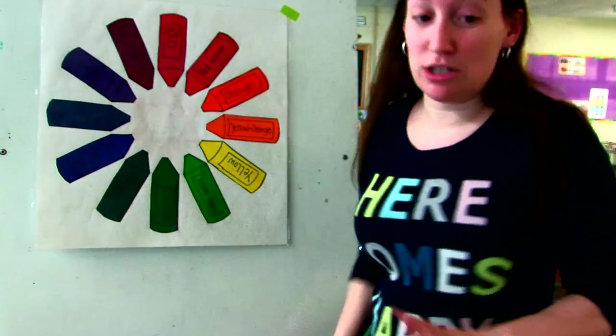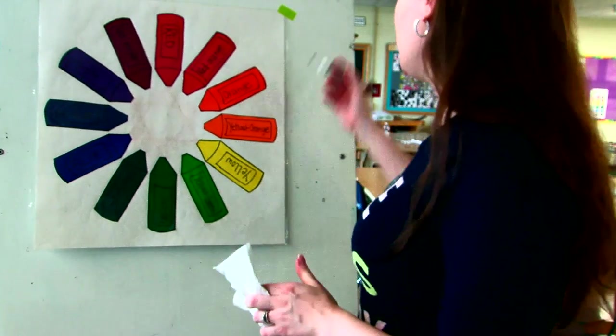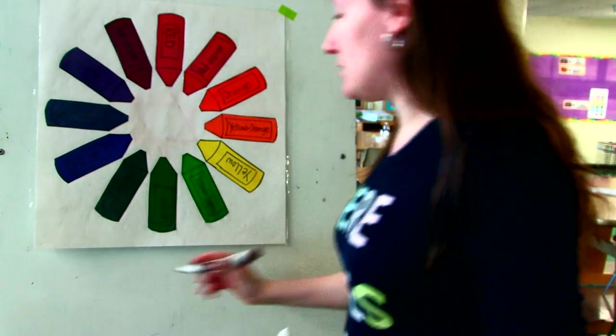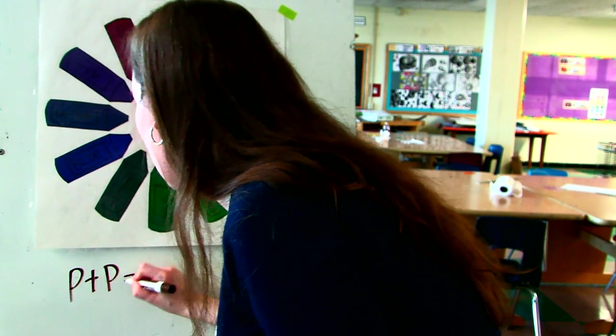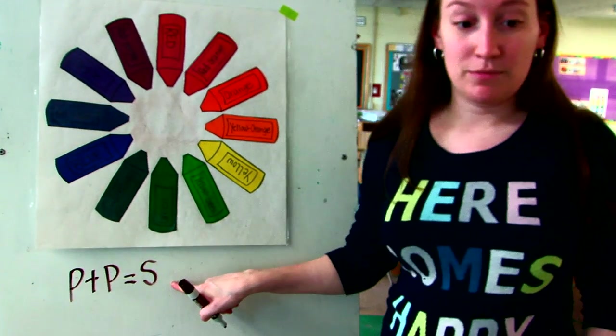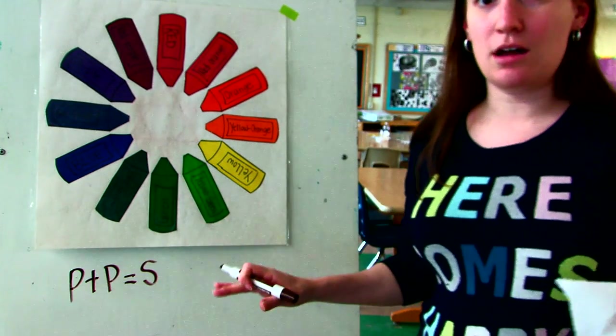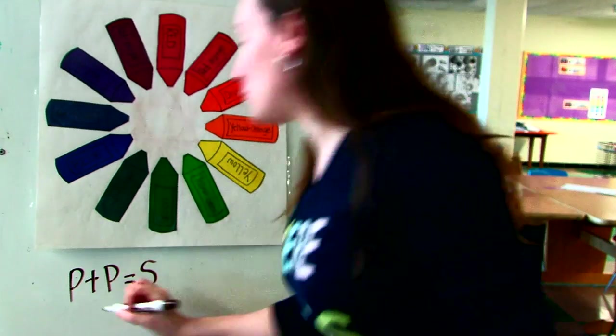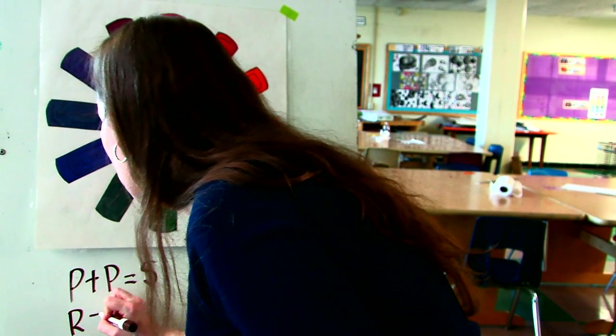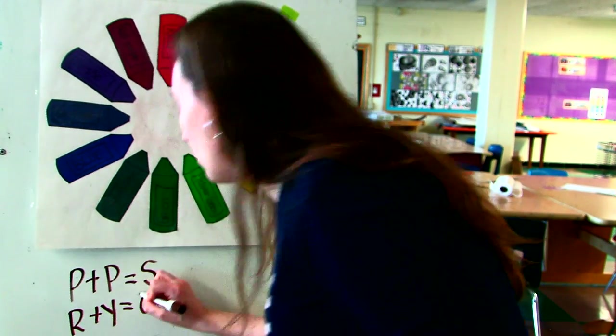So just as a reminder, primary plus primary equals secondary. That's our basic color math. Two primary colors equals a secondary color. So red plus yellow equals orange.